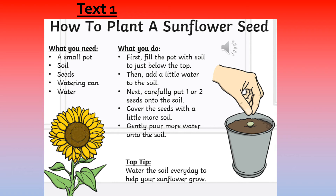Text one: How to plant a sunflower seed. What you need: a small pot, soil, seeds, watering can, water. What you do: first, fill the pot with soil to just below the top. Then add a little water to the soil. Next, carefully put one or two seeds onto the soil. Cover the seeds with a little more soil. Gently pour more water onto the soil. Top tip: water the soil every day to help your sunflower grow.